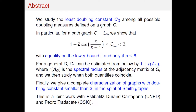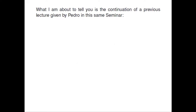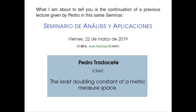This is joint work with Steve and Pedro. A few years ago, Pedro gave a talk in this seminar. That talk is the starting point of all this theory: we were able to prove what is the best constant for a general metric space for the doubling constant. I'm going to start by reviewing some of the preliminary results motivating this work.